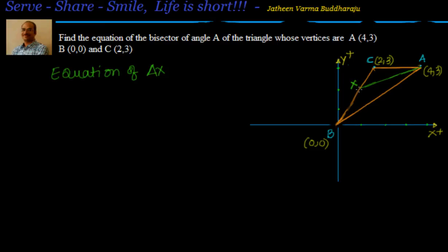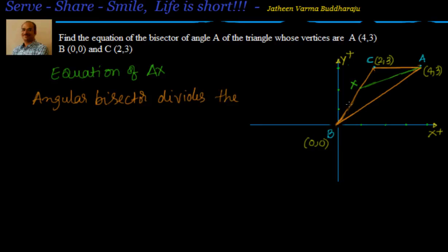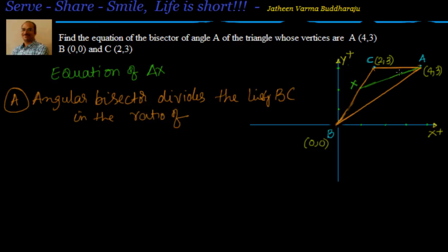Now we know A, but if I can find out the coordinates of X, then I can use the two-point slope form and find out the equation. The only question is how to find the coordinate of X. For that, we leverage the fundamental that the angular bisector divides the opposite side — in this case, line segment BC.